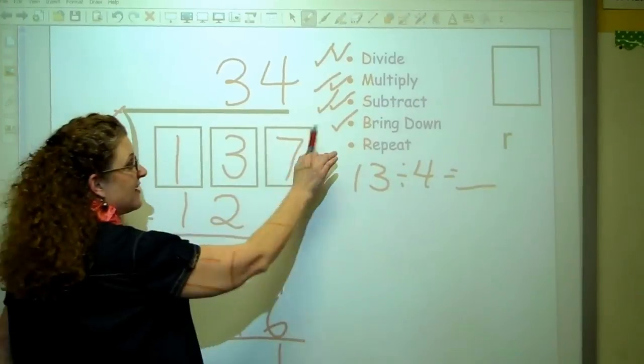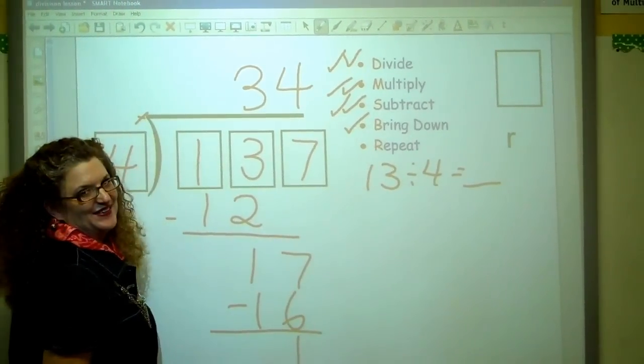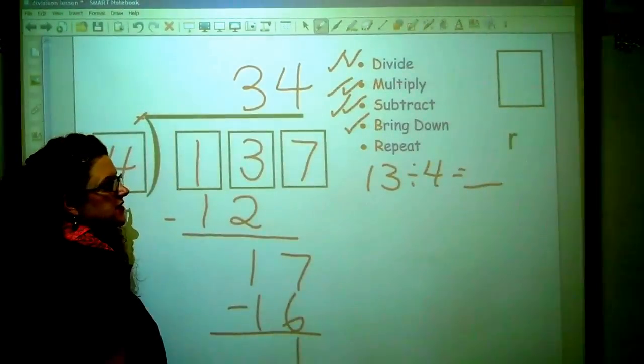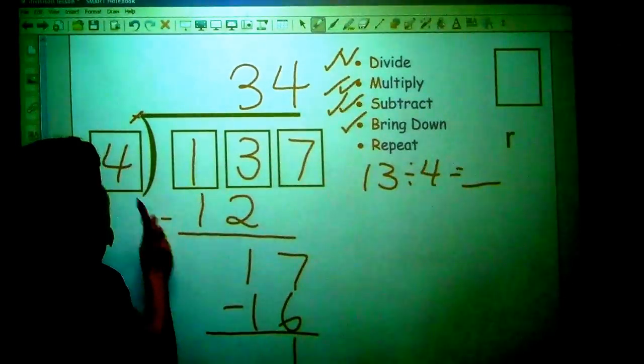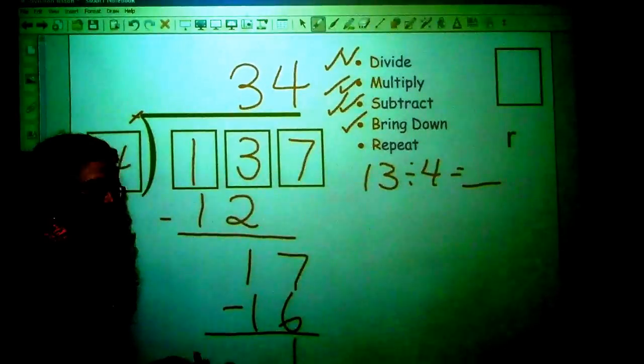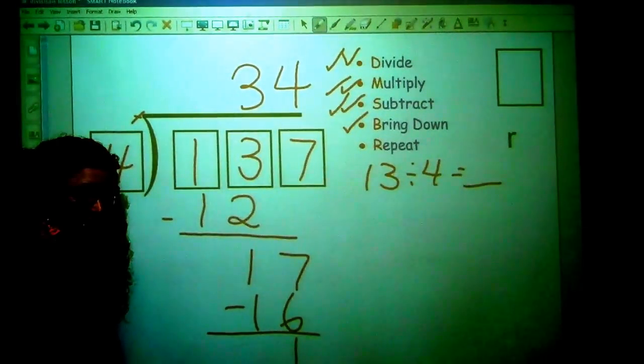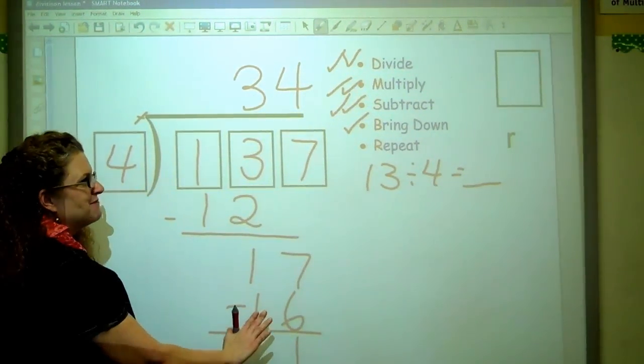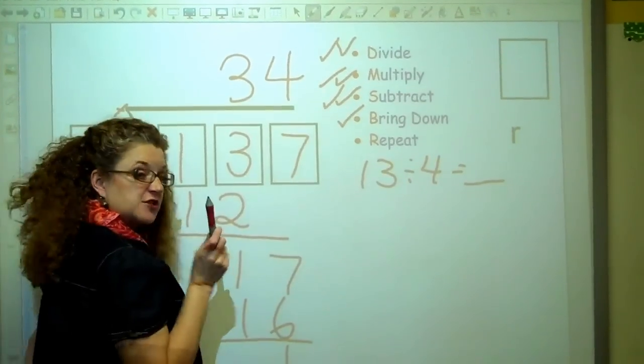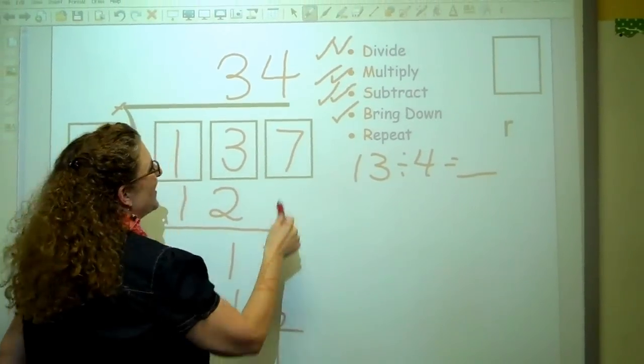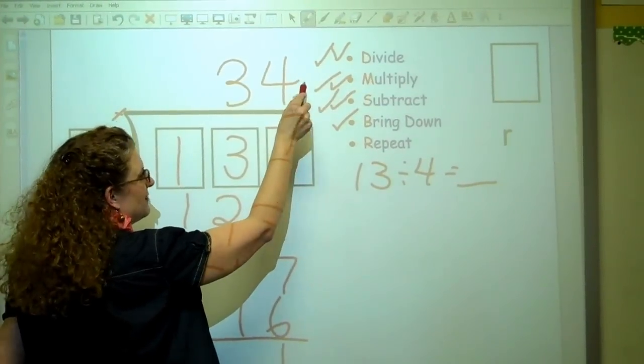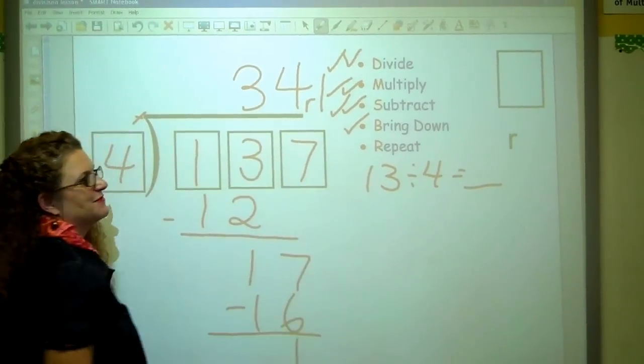And now I'm bringing it down. Do I have anything over here to bring down? No. I don't have anything to bring down. So should I repeat the process? Well, when I look at 1, can I divide that 1 by 4 and get a whole number? No. I'm not going to get a whole number. So I'm going to let that be my remainder because we can use that R as a remainder word instead. So that's going to be 34, remainder 1. And that will be my answer.